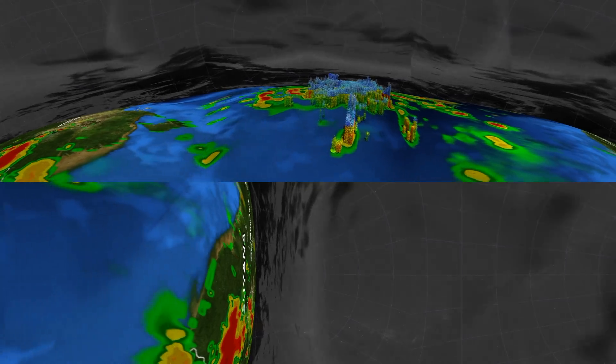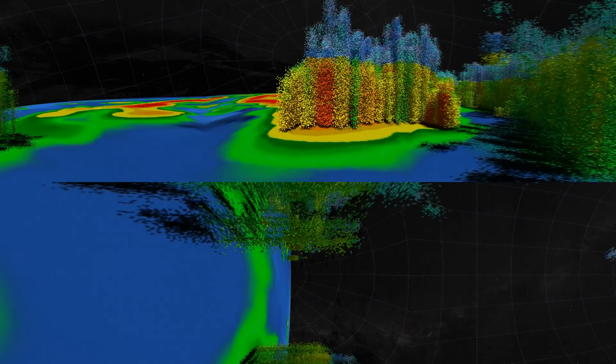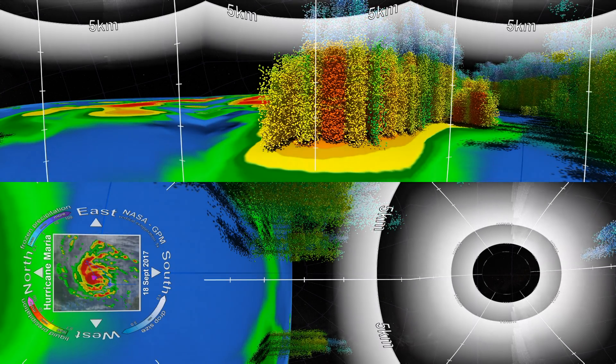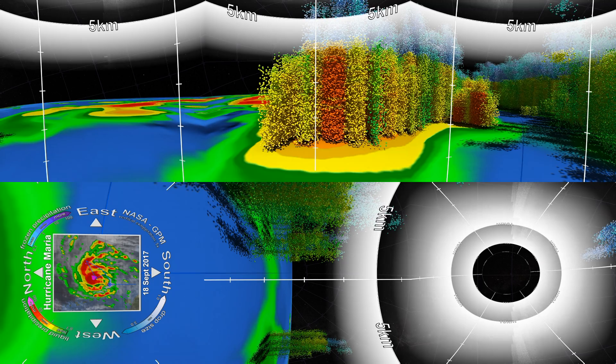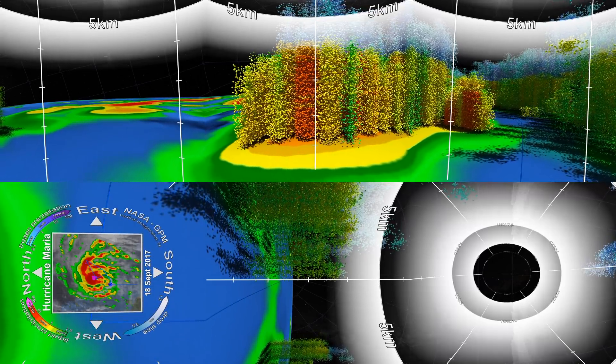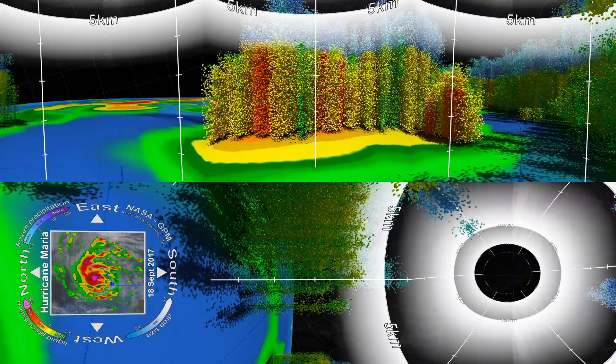Now, for the first time, we can take you inside a hurricane in a 360-degree view of this data. You can look around by moving your device or clicking and dragging on the screen. We're currently inside Hurricane Maria when it was a Category 1 hurricane in September 2017. This was a few days before it rapidly intensified to a Category 5 hurricane.